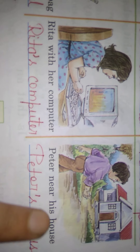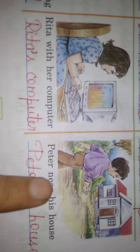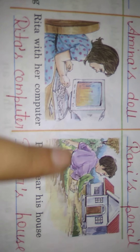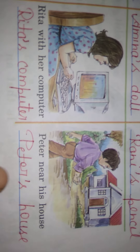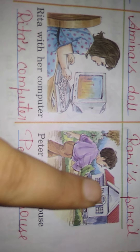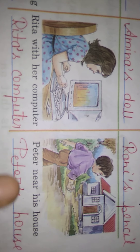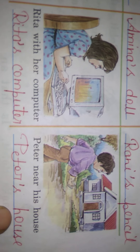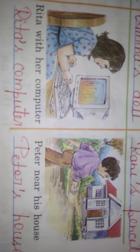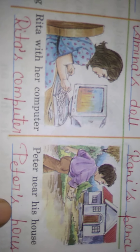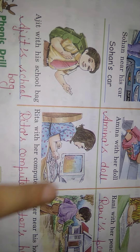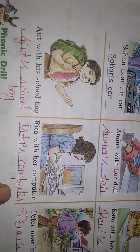Next — Peter near his house. Peter jo hai, yeh ladke ka naam hai, woh apne ghar ke paas hai. Toh yeh ghar kiska hai? Peter ka. So the answer is Peter's house — Peter ka ghar. Isko hum apostrophe S kehte hain. So students, you will fill in your book.